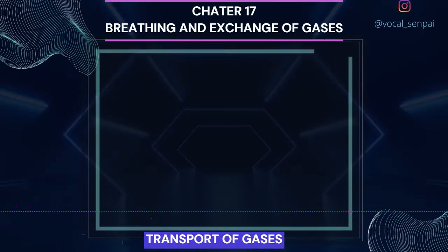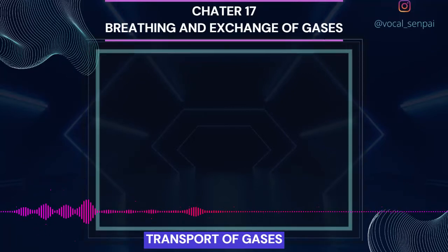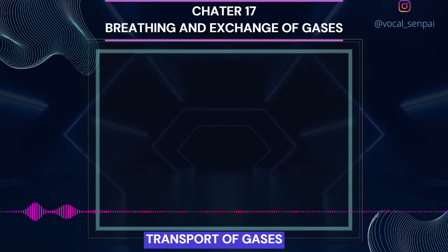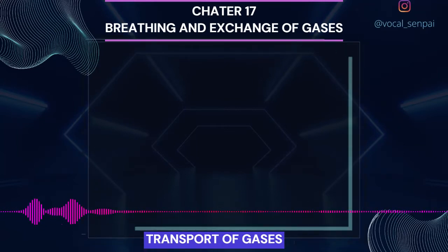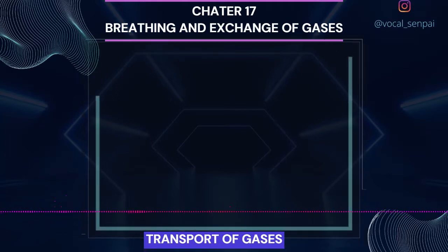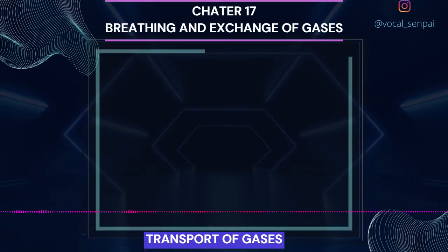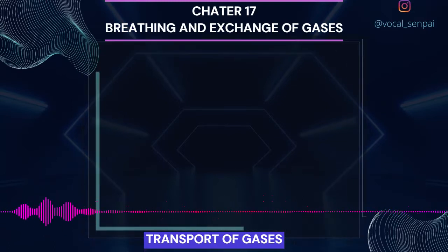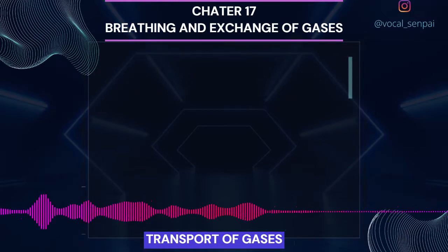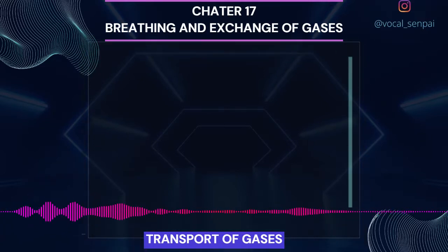Transport of Gases: Blood is the medium of transport for O2 and CO2. About 97% of O2 is transported by RBCs in the blood. The remaining 3% of O2 is carried in a dissolved state through the plasma. Nearly 20–25% of CO2 is transported by RBCs, whereas 70% of it is carried as bicarbonate. About 7% of CO2 is carried in a dissolved state through plasma.